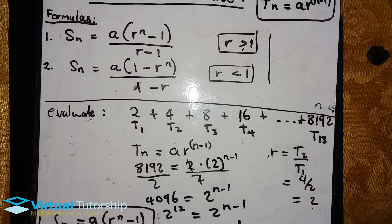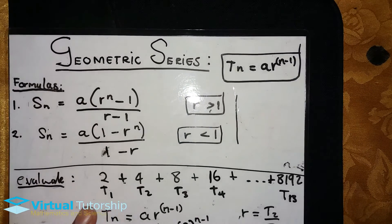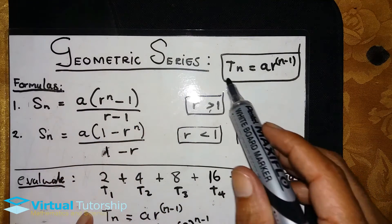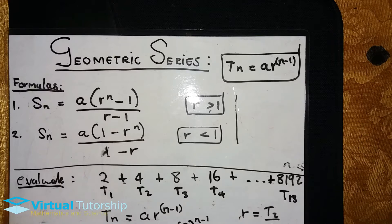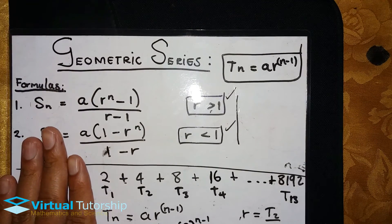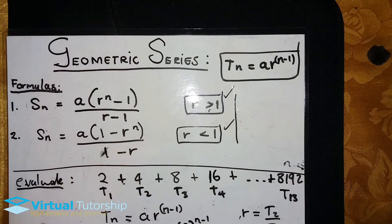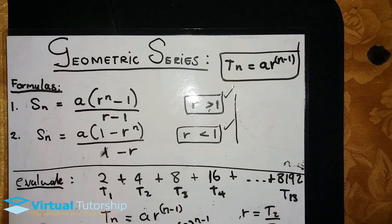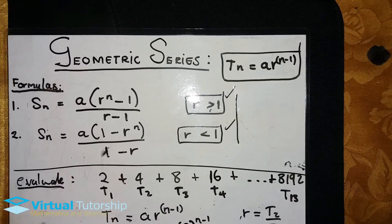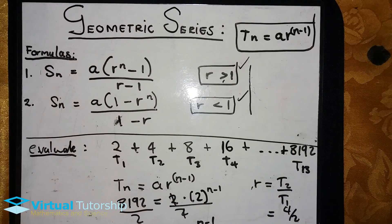Whenever we apply and evaluate a geometric series, we look at which formula to use. If you are given the last term of the geometric series, first calculate the n value using the geometric sequence formula. For a geometric series we multiply by a common ratio, whereas for an arithmetic series we add or subtract by a common value. Thanks for watching, bye-bye.